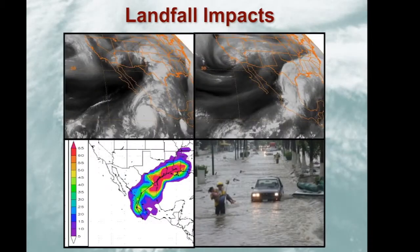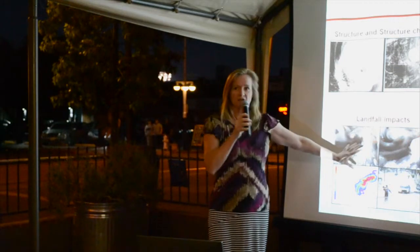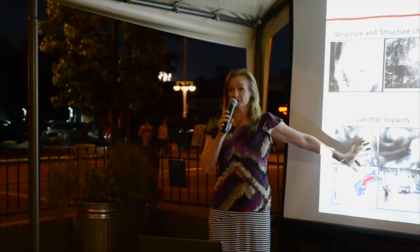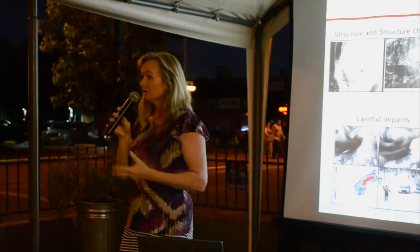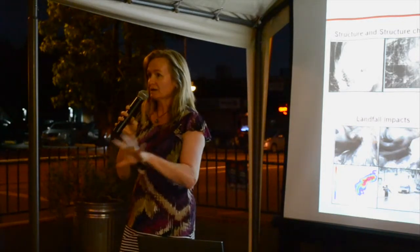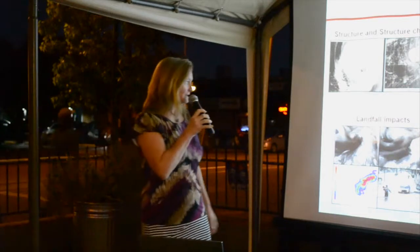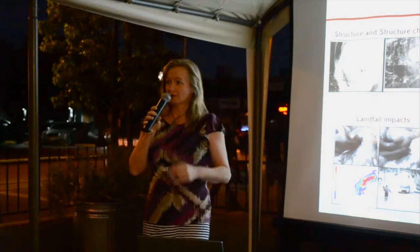We also look at landfall impacts. For human needs, we need to understand the destructiveness that a tropical cyclone will impart when it makes landfall. Because of various types of coastline topography and other factors, understanding how the tropical cyclone will change as it makes landfall and how it will impact individual locales is very important. This incorporates not just the physical attributes of the tropical cyclone itself, but also the economic and social structure of the area, in order to understand impacts and help mitigate them.